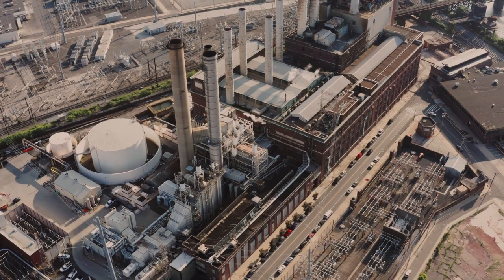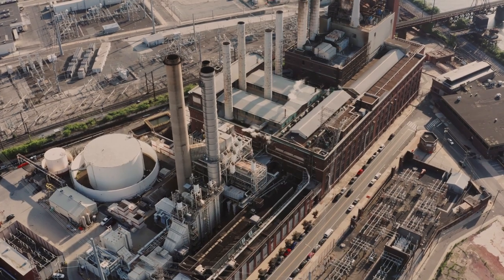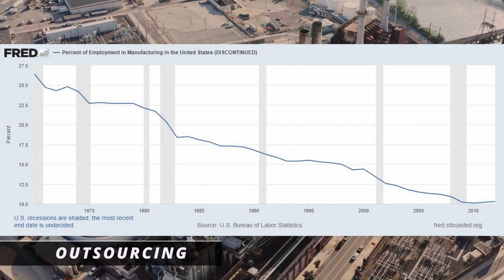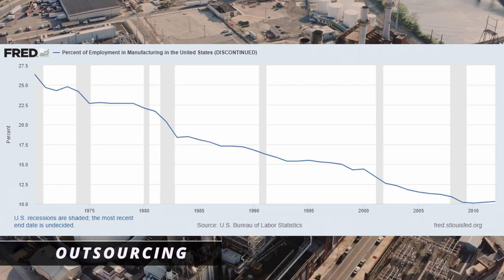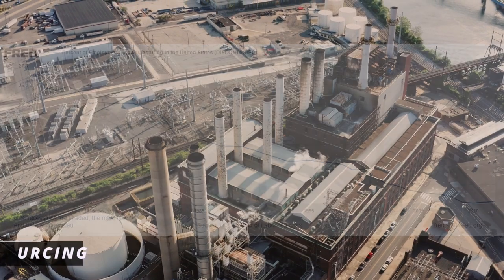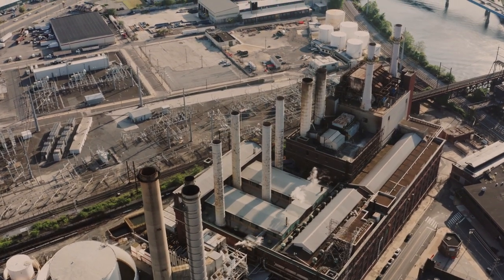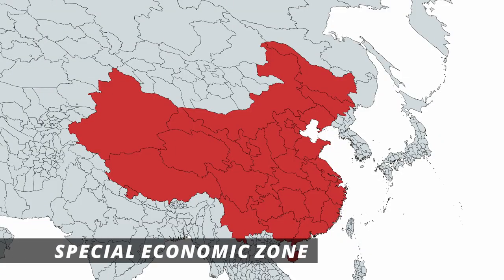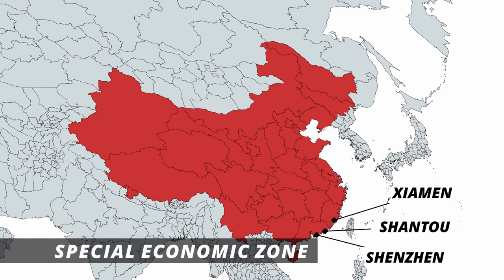Manufacturing work is now being outsourced to semi-periphery countries like China and Mexico, and their governments establish manufacturing zones to incentivize the utilization of their services. An example of this would be the special economic zones in China, like Shenzhen, Shantou, or Xiamen. These regions are given special permissions by the government so that they can receive tax benefits and are exempt from trade regulations.